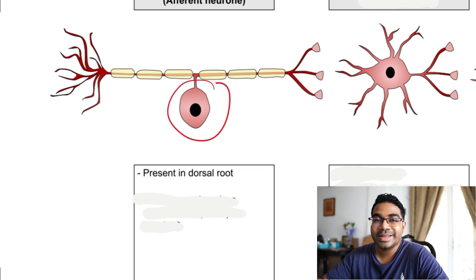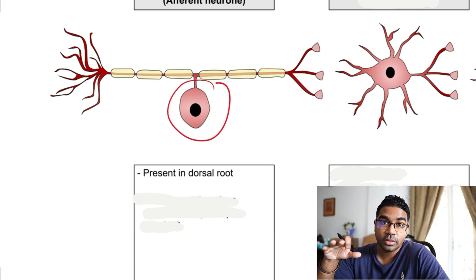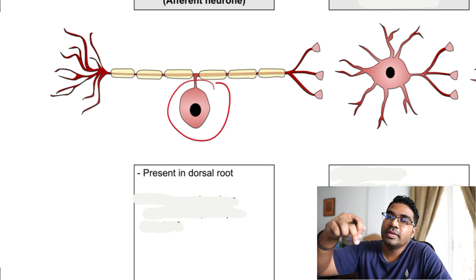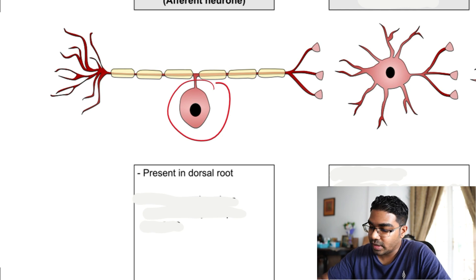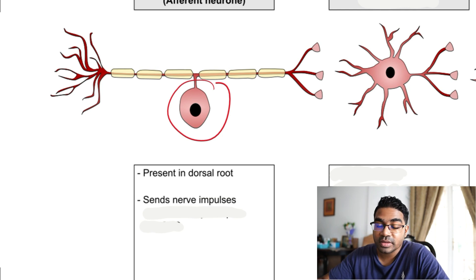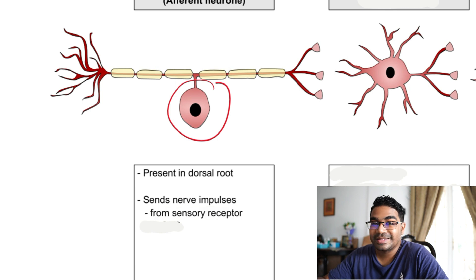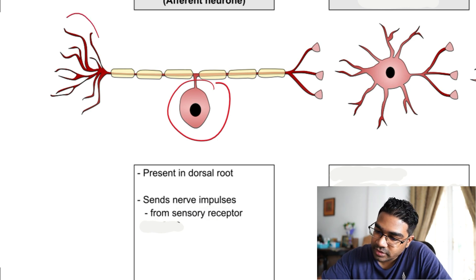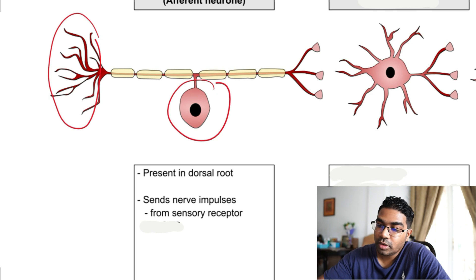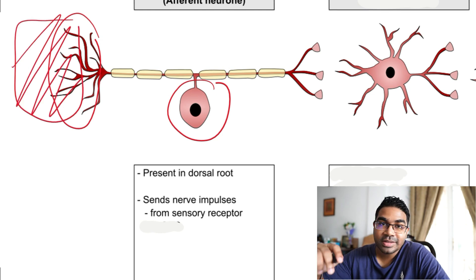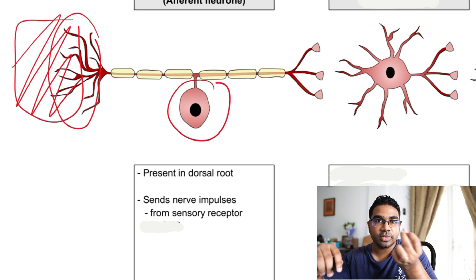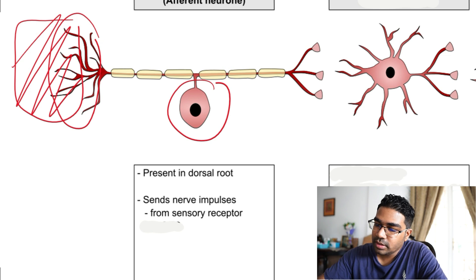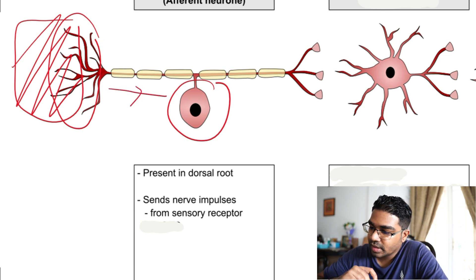The sensory neuron is normally located in the dorsal root of the spinal cord. It sends nerve impulses from the sensory receptor. These sensory receptors convert different types of energy into electrical impulses, which are then transmitted along the neuron.